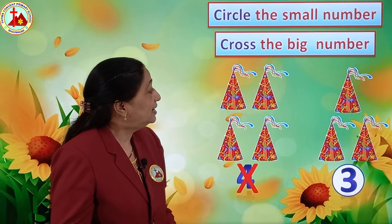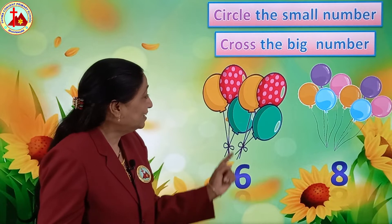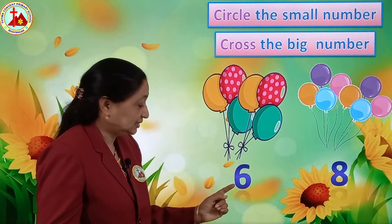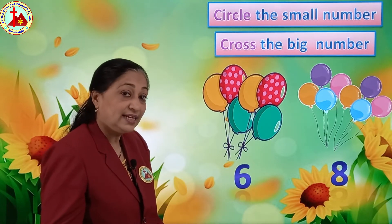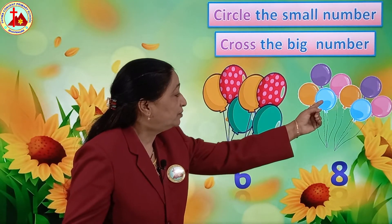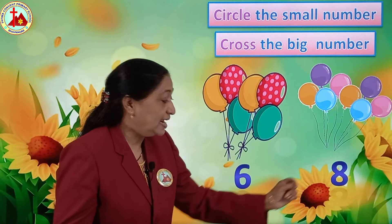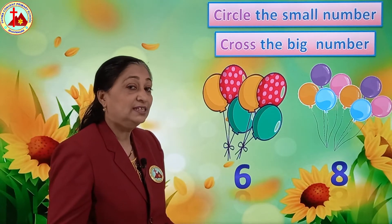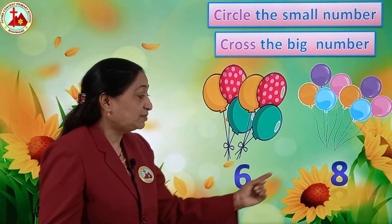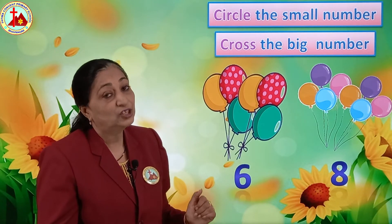Now we will do the next one. See so many balloons - you all like to play with balloons. Now we are going to count them: 1, 2, 3, 4, 5, 6. So here there are 6 balloons in this bunch. Now let's see here how many balloons are there? 1, 2, 3, 4, 5, 6, 7, 8. Here there are 8 balloons. Now will anyone tell me which is a small number? 6 and 8 - 6 comes before 8, so before numbers are always the smaller numbers.